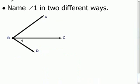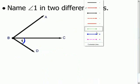And lastly, let's just take a look at one more example here. Name angle 1 in two different ways. So angle 1, the angle we are referring to, is this bottom angle here.